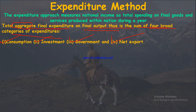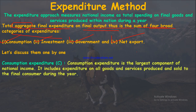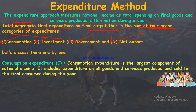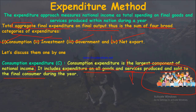The first category is consumption expenditure, which is the largest component of national income — remember this from an MCQ perspective. It includes expenditure on all goods and services produced and sold to the final consumer during the year. Goods are those which physically exist and can transfer physical ownership; services are intangible.